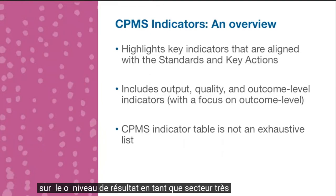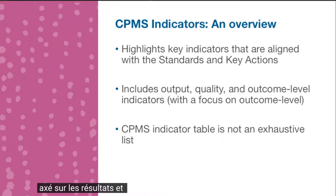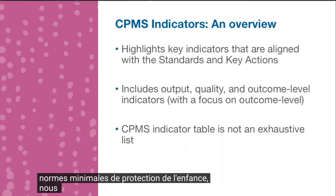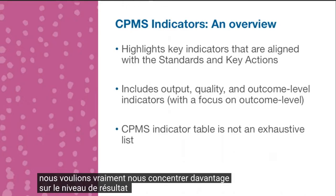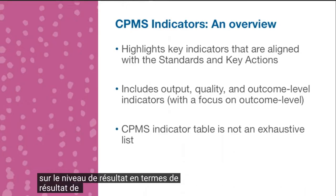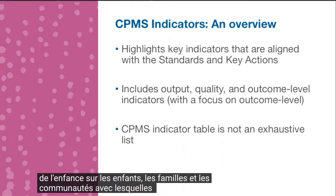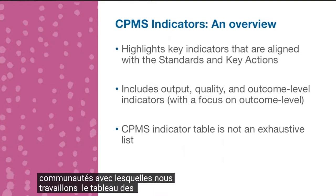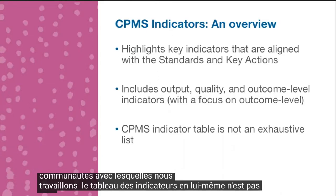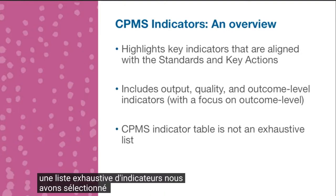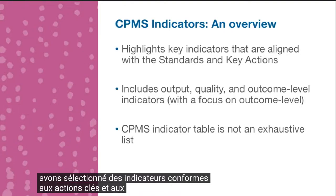As a sector, we have been very output focused, and during the revision of the Child Protection Minimum Standards, we really wanted to focus more on the outcome level in terms of the outcome of our child protection activities on the children, families, and communities who we work with. The indicator table itself is not an exhaustive list; we have selected indicators in line with the key actions and the standards.